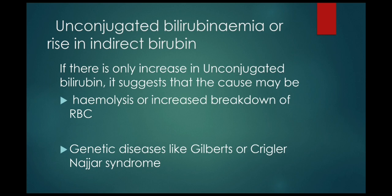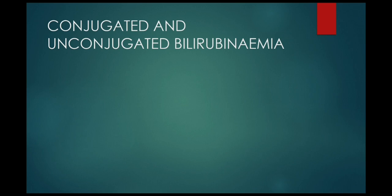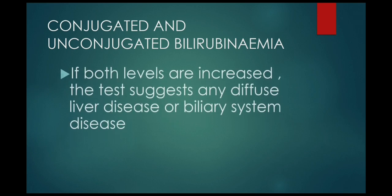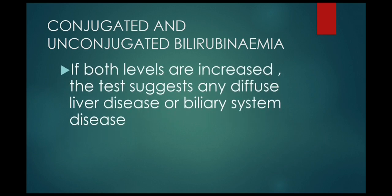Breakdown of red blood cells can occur because of various reasons. Genetic diseases like Gilbert's syndrome or Crigler-Najjar syndrome can also present with unconjugated bilirubinemia. What are the causes for increase in total bilirubin? If both levels are increased, the test suggests any diffuse liver disease or biliary system disease.